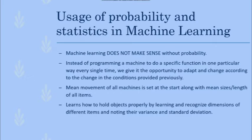A machine requires particular sets of data to analyze and automate an analytical model building. It is one of the branches of artificial intelligence based on the idea that systems could learn from previously acquired data, identifying patterns and making decisions accordingly. An example we'll be looking at today is one where a mechanical arm learns how to differentiate between a certain set of items.